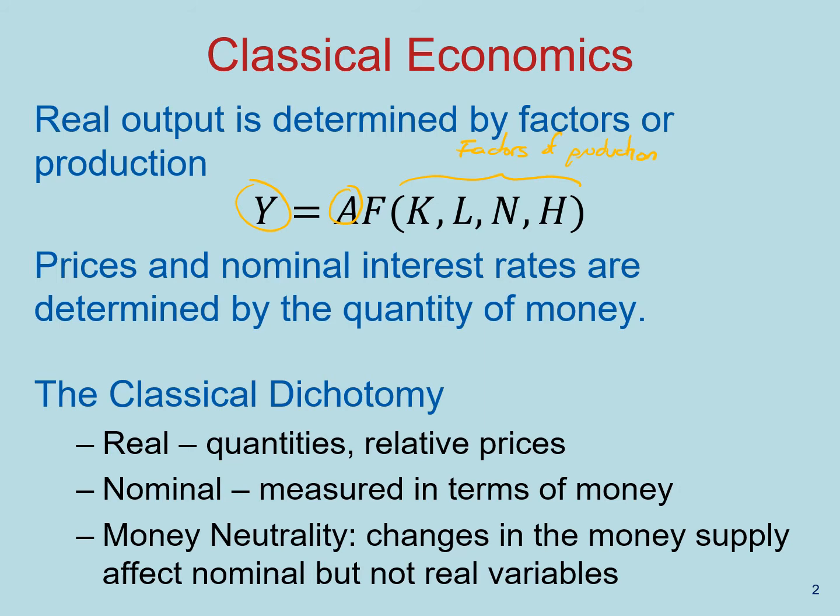We also learned that prices and nominal interest rates are functions of the money supply. The Federal Reserve manages the money supply through monetary policy. Lastly, we motivated the classical dichotomy, which explained that real quantities and output are separate from nominal values, resulting in monetary neutrality.